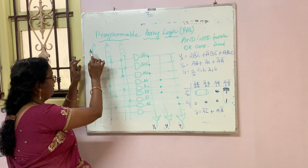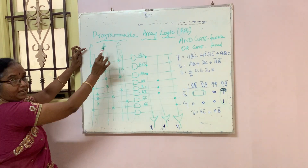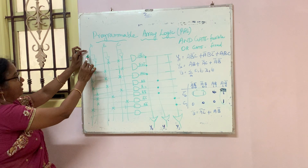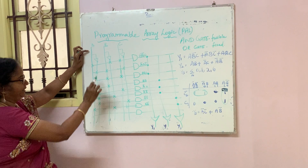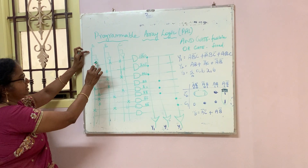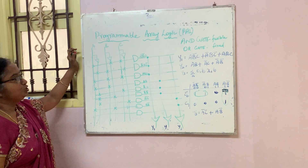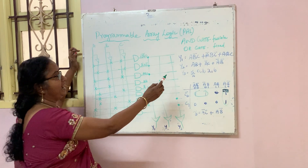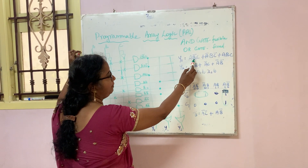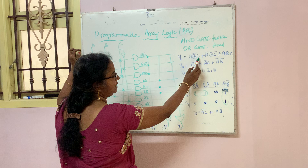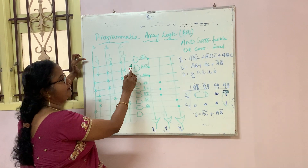Here we have to draw the three standard input lines A, B, C, and here we have to draw the NOT gate. This gives us A bar, B bar, and C bar. So in Y1 we are having A, B bar, C.